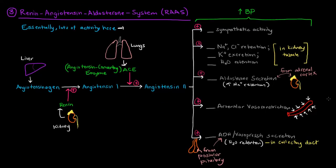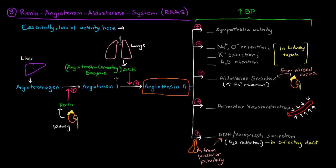Another major factor is the renin-angiotensin-aldosterone system, or RAS. The liver produces angiotensinogen, an inactive form of angiotensin. The kidneys produce renin, which converts angiotensinogen into angiotensin I. Angiotensin I is then converted into angiotensin II by angiotensin-converting enzyme (ACE), which comes from the lungs and also from endothelial cells in the kidney.